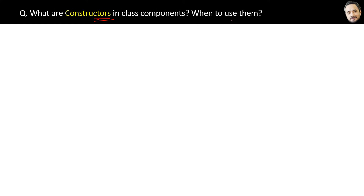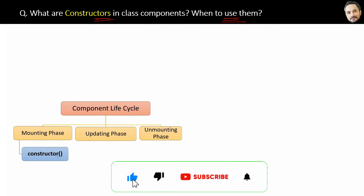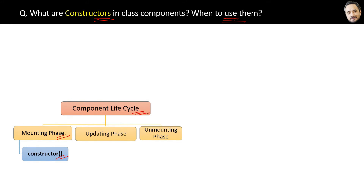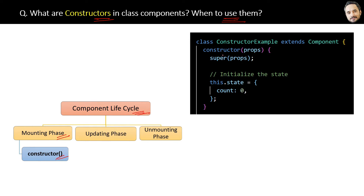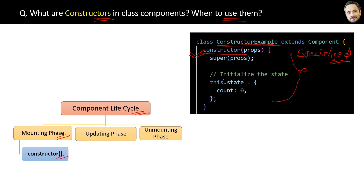What are constructors in class components, and when should we use them? As we already know, the constructor is the first method of the mounting phase of the component lifecycle. Looking at the constructor code, you can observe that its structure or body is very much similar to a function — because constructor is a function — but it is a specialized function. Whenever you call this class component from app.js, index.js, or from any parent component, this constructor function will be invoked automatically. You do not need to call it explicitly.